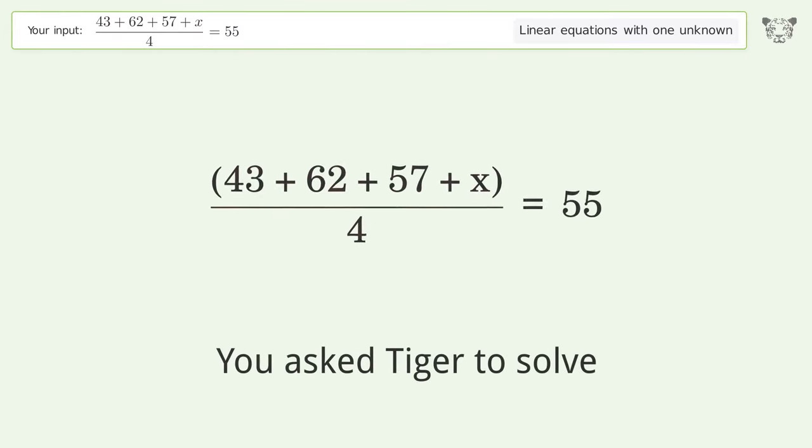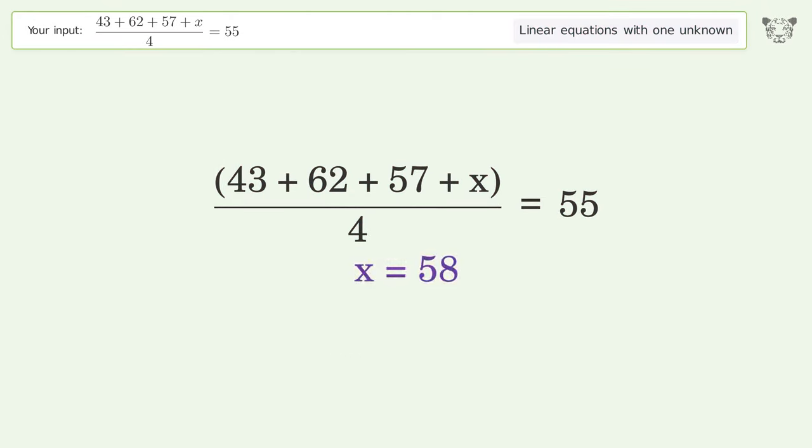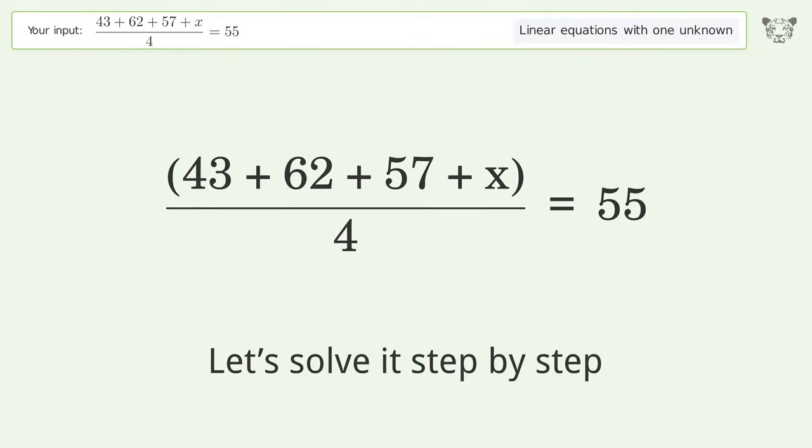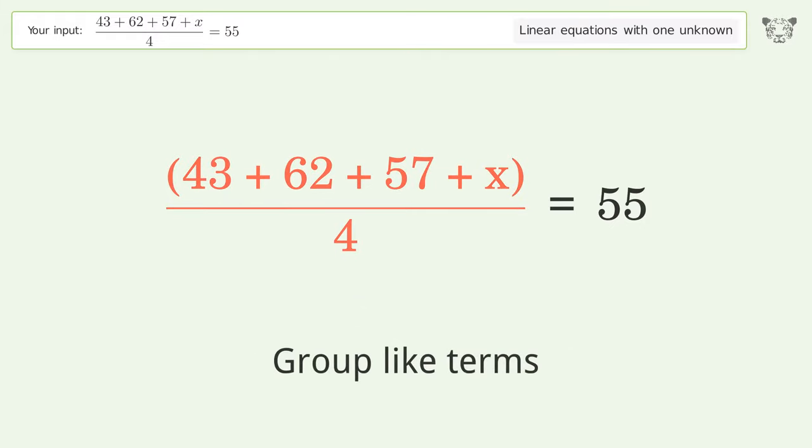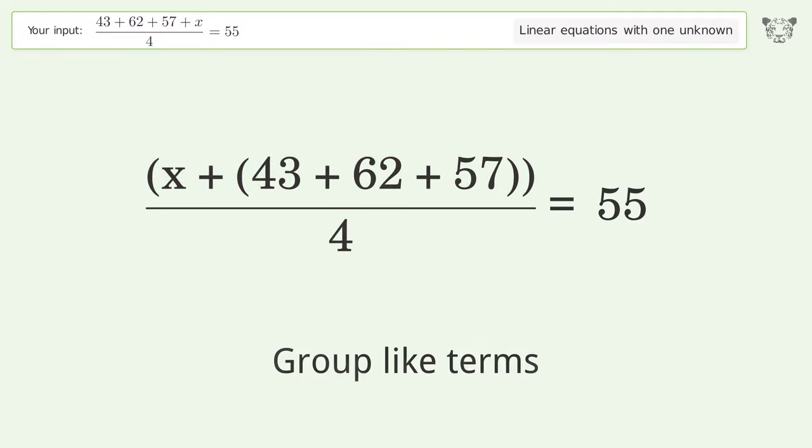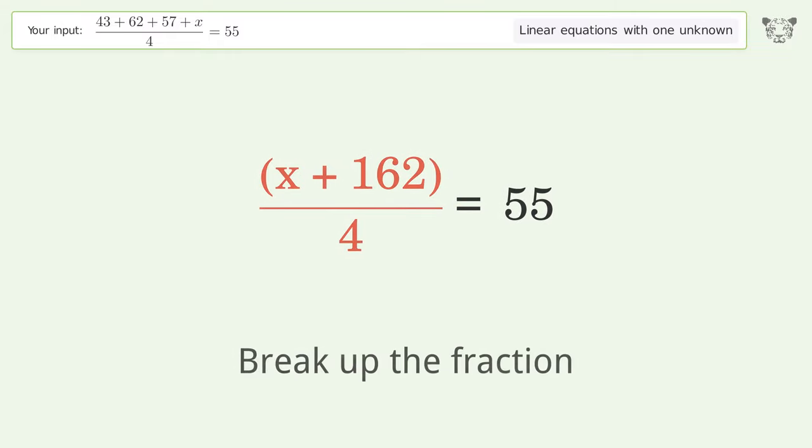You asked Tiger to solve this. This deals with linear equations with one unknown. The final result is x equals 58. Let's solve it step by step. Simplify the expression, group like terms, simplify the arithmetic, break up the fraction.